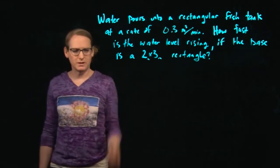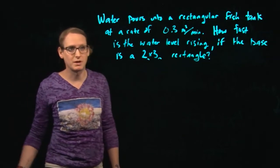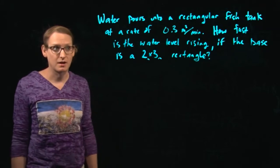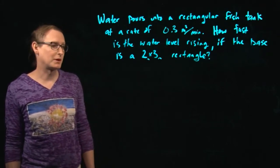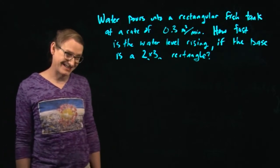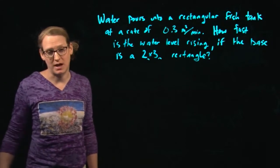So I'm going to go ahead and read it, even though I'm sure you can read it too. Maybe my handwriting is terrible and you can't. So it says, water pours into a rectangular fish tank at a rate of 0.3 meters cubed per minute. So that's a statement. How fast, here's the question, how fast is the water level rising if the base is a 2 by 3 rectangle?